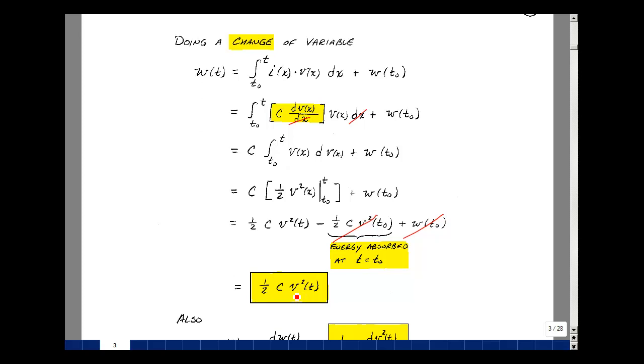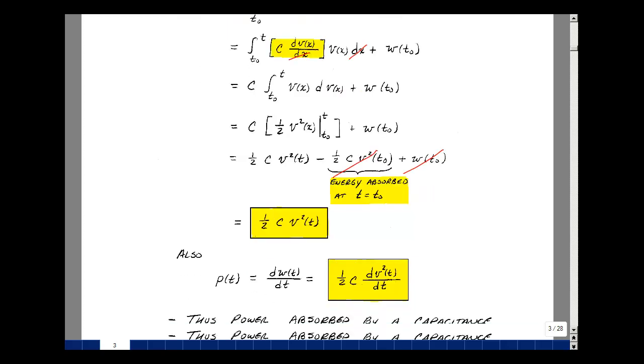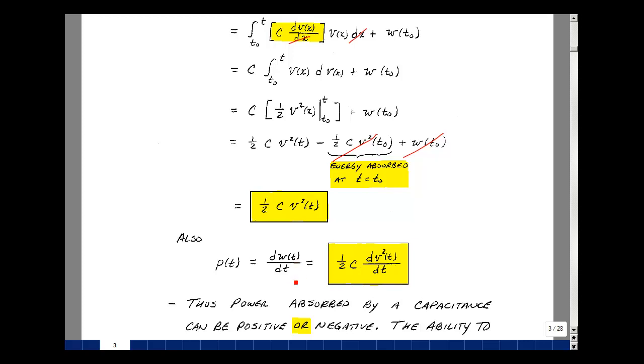Because C is positive, and V can be positive or negative, but when you square it, it's always positive. The energy absorbed by a capacitance is always positive. What about the power? Power is the derivative of our energy with respect to time. The derivative of this, again, C is not a function of time.